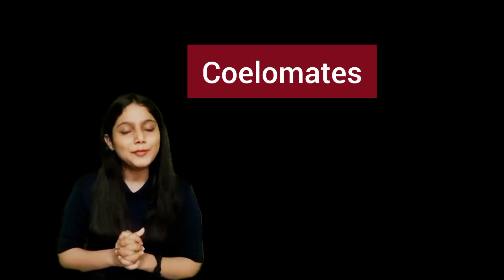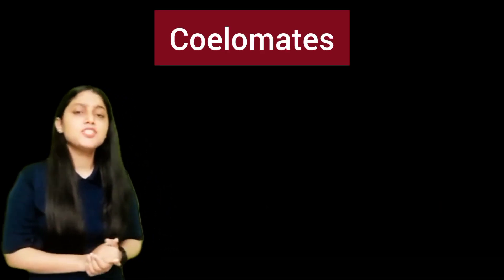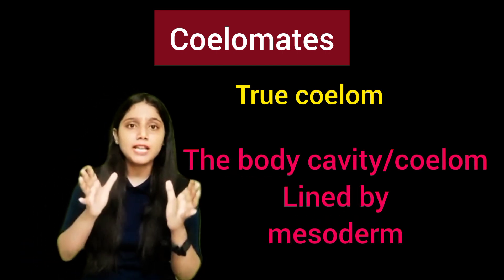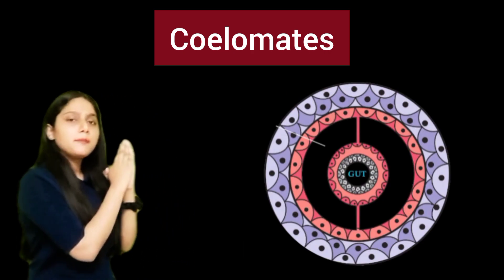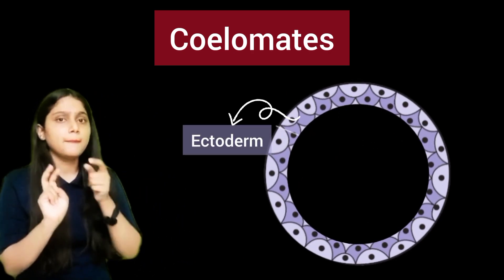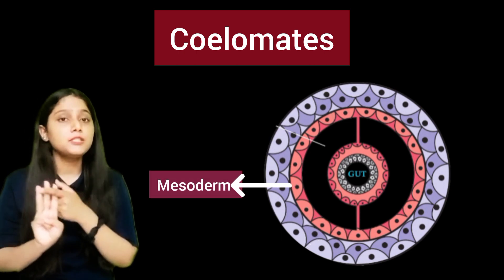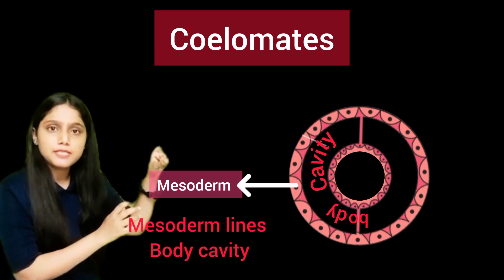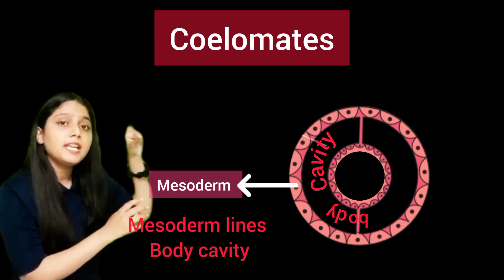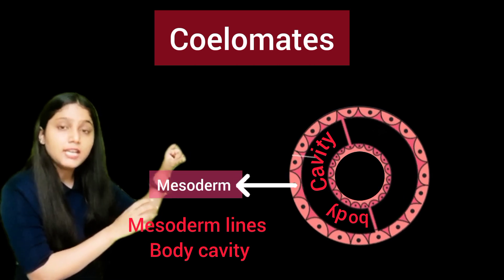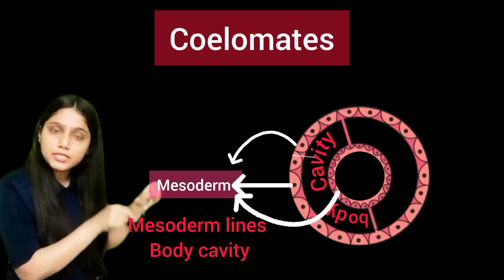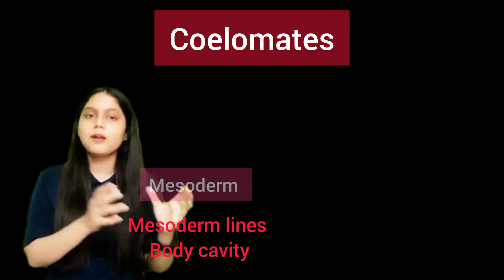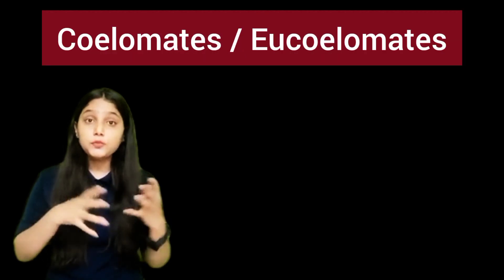First, we will talk about coelomates. Coelomates are the organisms that possess true coelom. What is this true coelom? The coelom lined by mesoderm is called true coelom. If you see the image on the board, you will see an ectoderm, an endoderm, and also a mesoderm. The mesoderm is present in such a way that it lines the body cavity on its outer side and also on its inner side. Such a type of coelom is called true coelom, and organisms possessing true coelom are called coelomate organisms.